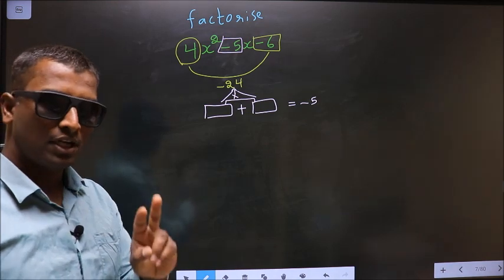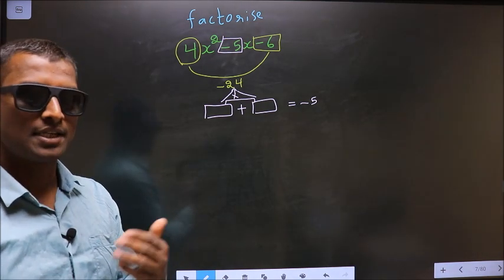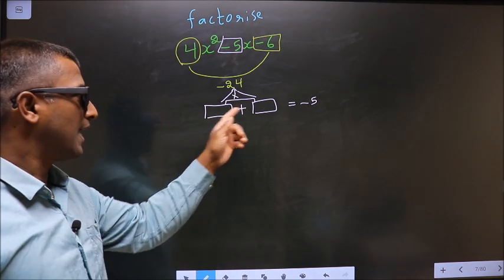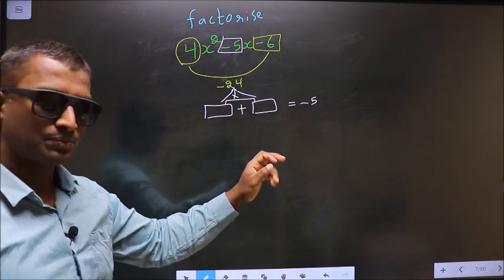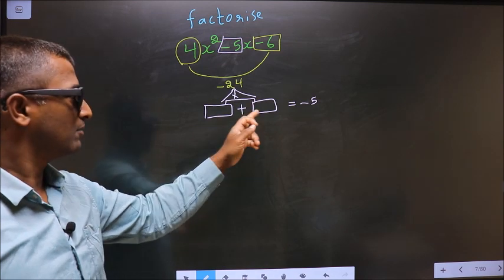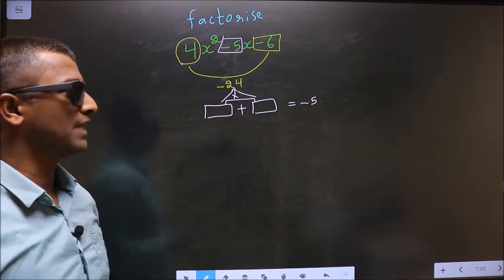I repeat: look for two numbers such that when you add them, you get the middle coefficient which is minus 5, and when you multiply them, you get minus 24.